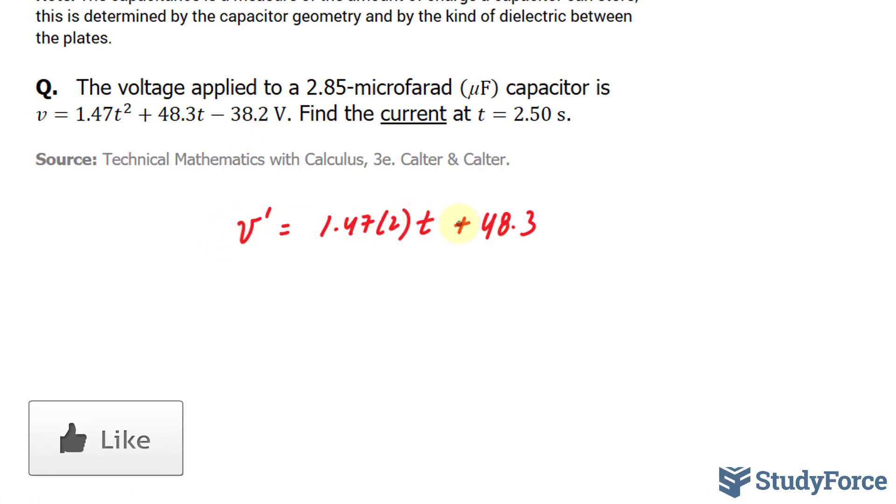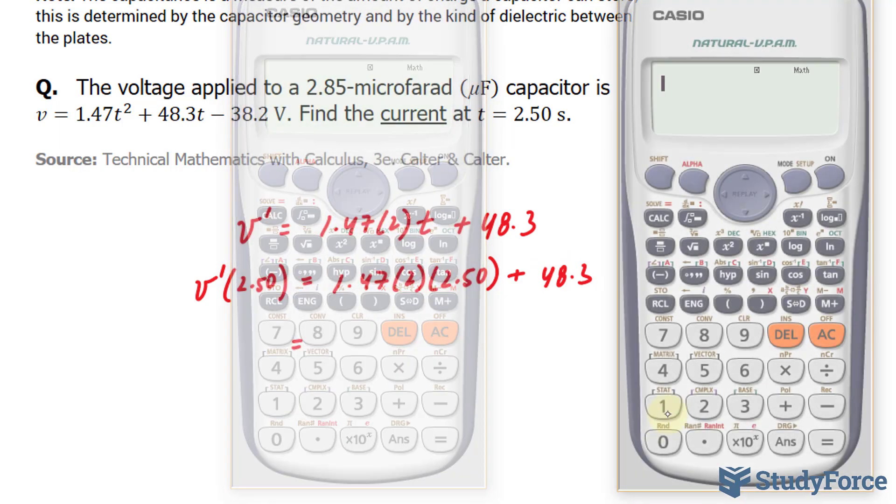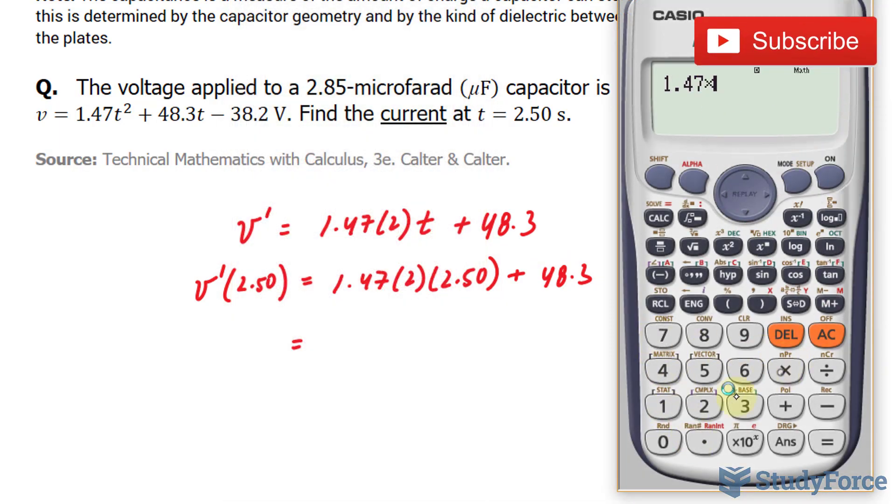Now that I've found my function, I need to evaluate this when T equals 2.50. V prime at 2.50 equals 1.47 times 2 times 2.50 plus 48.3. I'm going to use my calculator to do this. That gives us 55.65.